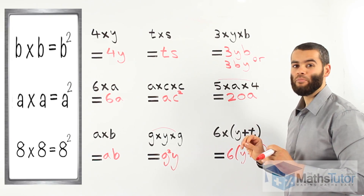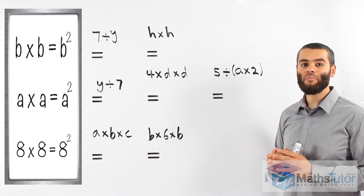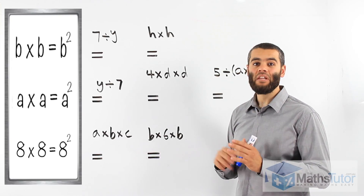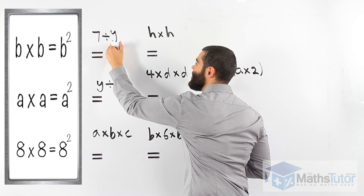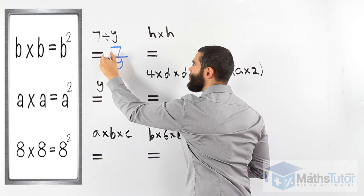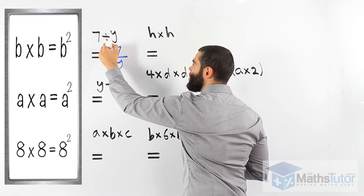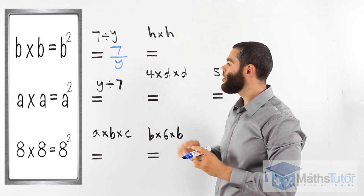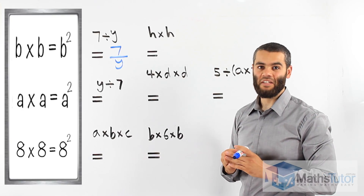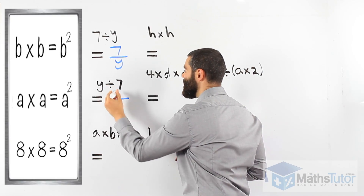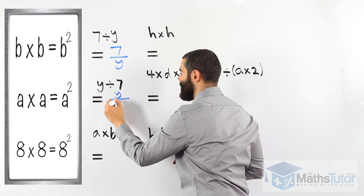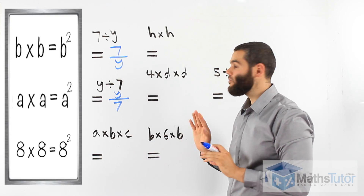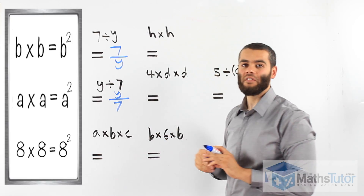Let's do some more examples. 7 divided by Y — we learned that division means fraction. So 7 divided by Y means 7 over Y. The division becomes a fraction bar; 7 is the numerator and Y is the denominator. Next: Y divided by 7. Y is the numerator on top, and 7 is the denominator on the bottom. Very important — I've seen students mix them up. What comes first is the numerator, what comes second is the denominator.